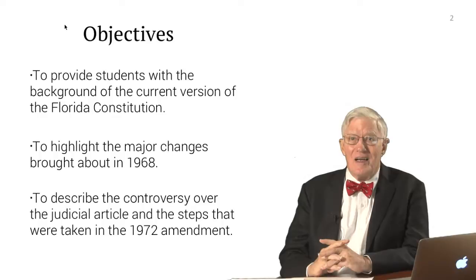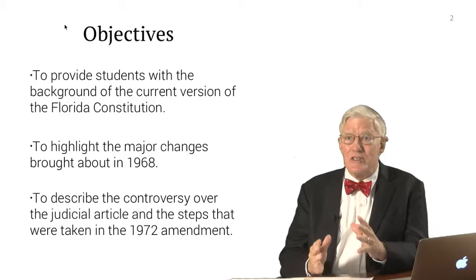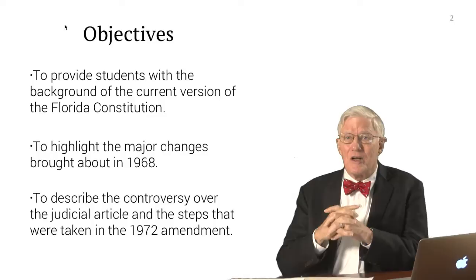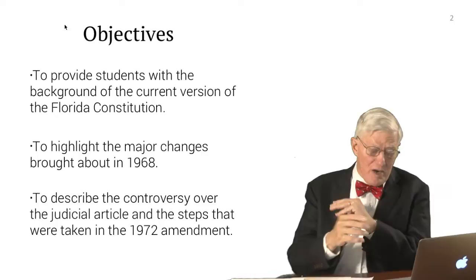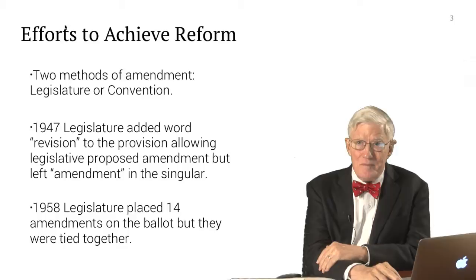In terms of our objectives, I want to make sure that you understand the major changes that came about in 1968, and to describe the controversy that prevented the amendment of the judicial article and how that controversy was overcome in the development, ultimately, of a modern judicial article.